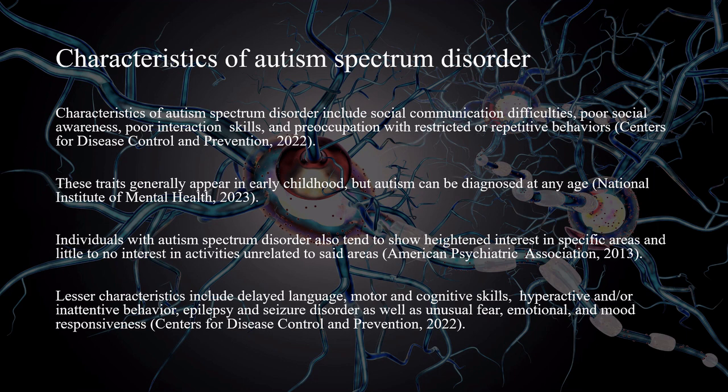Characteristics of Autism Spectrum Disorder include social communication difficulties, poor social awareness, poor interaction skills, and preoccupation with restricted or repetitive behaviors. These traits generally appear in early childhood, but autism can be diagnosed at any age. Individuals with Autism Spectrum Disorder also tend to show heightened interest in specific areas and little to no interest in activities unrelated to those areas.